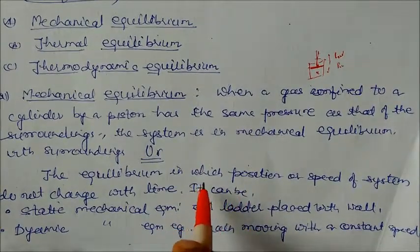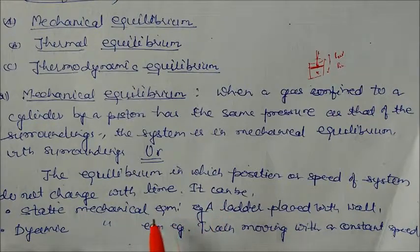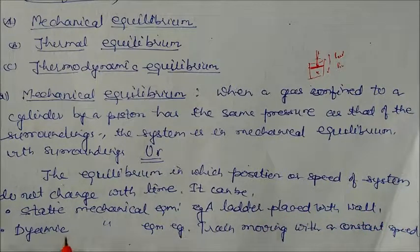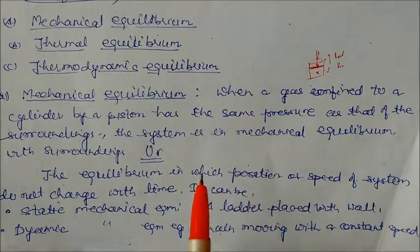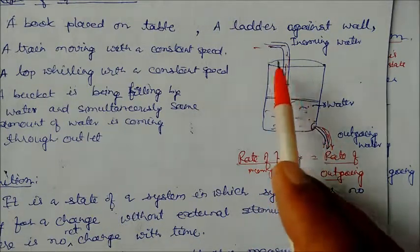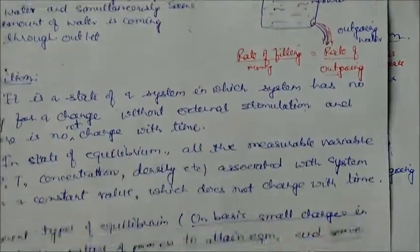In mechanical equilibrium, the position or speed of the system does not change with time. It can be static mechanical equilibrium — like a ladder placed against a wall — where it is not moving. There is also dynamic mechanical equilibrium, like a train moving at constant speed, or the bucket example where water outgoing and incoming are at the same rate, keeping the level constant.